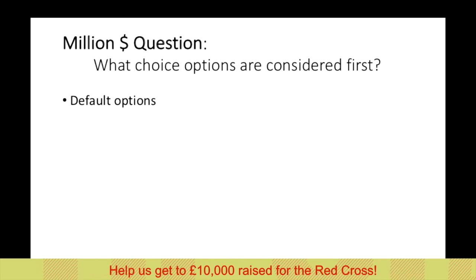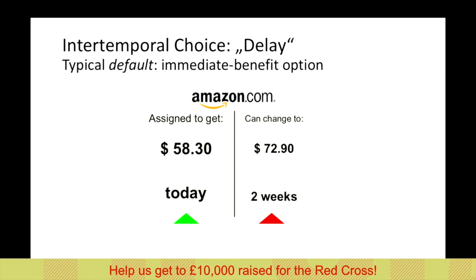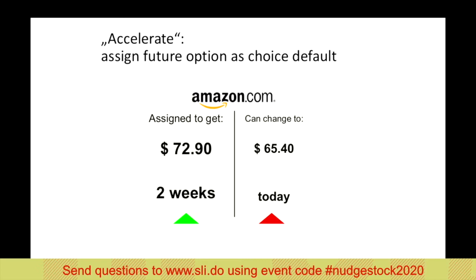The million dollar question in query theory is: which choice options are considered first? One important answer is default options. In the delay condition, the immediate option is assigned as the default — you get an amount right away, but you can change to get more later. In the acceleration condition, the later option is the default, and you can switch to the earlier one. Does it make a difference? Yes — George Loewenstein showed this back in 1988.